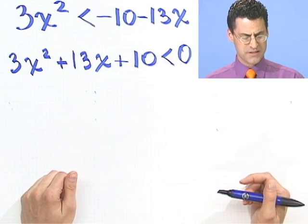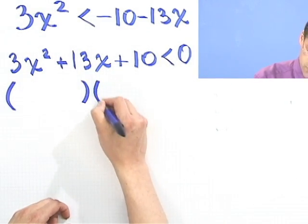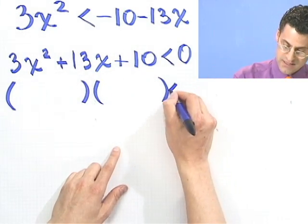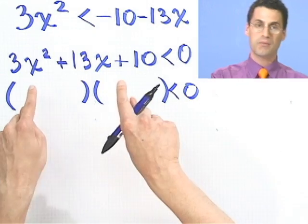So what I would see after you bring all that over is 3x² then plus a 13x, because I bring that over to this side. And if I bring that minus 10 over, it'd be a plus 10. And that's all going to still be less than, but now there's nothing here, so I just have a 0 here now.